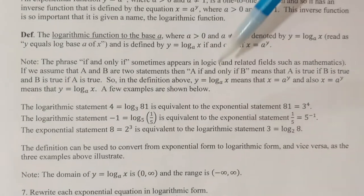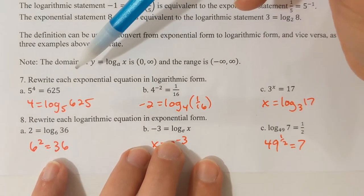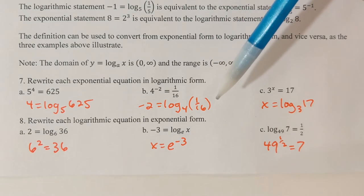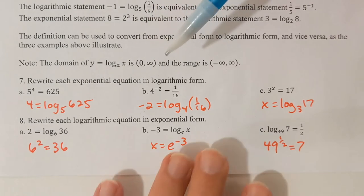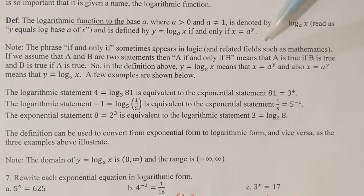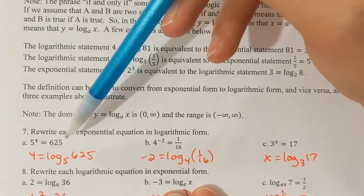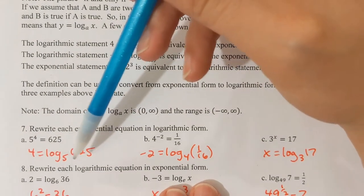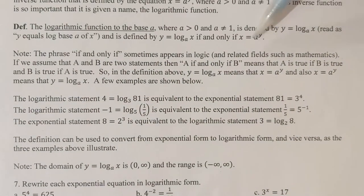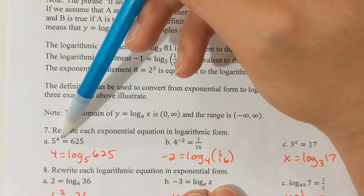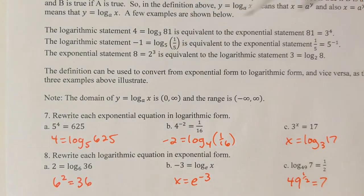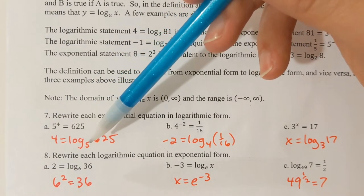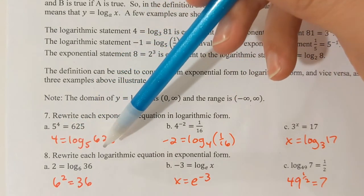Let's try problem 7 — we're going to rewrite each exponential equation into logarithmic form. Part a: 5⁴ = 625. We identify x, a, and y and rewrite. x is 625 — that's the input into the logarithm. Five is the base of the exponential, so that's the base of the logarithm. Four is the y value, so it goes on the other side. Therefore: 4 = log_5(625) is this equation rewritten into logarithmic form.